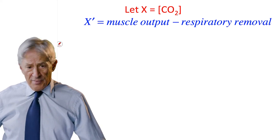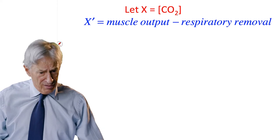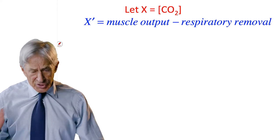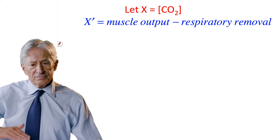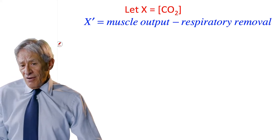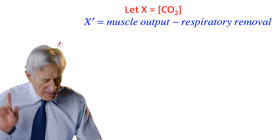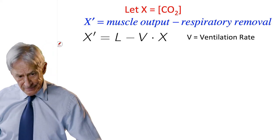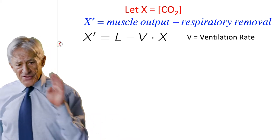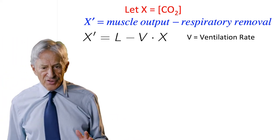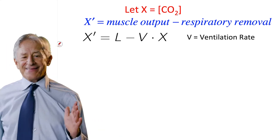X prime equals what makes CO2 go up minus what makes CO2 go down. So in words, what makes CO2 go up is muscle output, and what makes CO2 go down is respiratory removal. Now we've got to put some math on there. The first assumption is, this is the form of the differential equation.